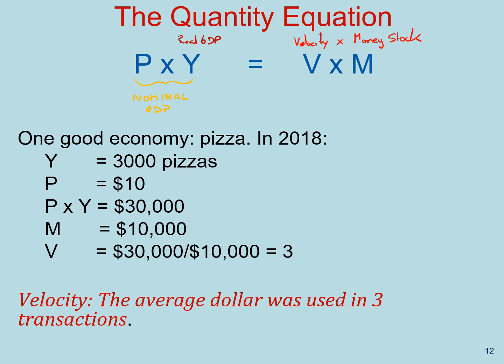To see this more clearly, let's think about a simple one-good economy where the only good produced and sold is pizza. Suppose that in 2018, the total production of pizzas was 3,000 pizzas, each sold for $10, giving a nominal GDP of $30,000. Now if there was only $10,000 in the money stock, each dollar must have been used in an average of three transactions. That's exactly what velocity of money is — the speed at which the average dollar circulates in the economy. The right-hand side of this equation tells us that nominal GDP must have a counterpart in the amount of dollars used in transactions during the same period.